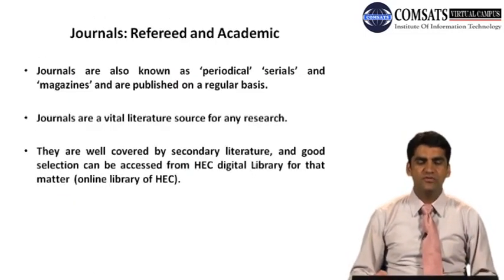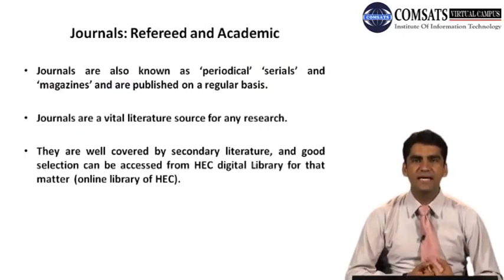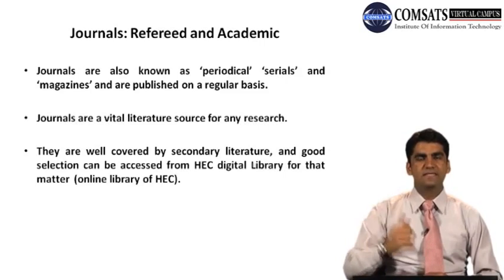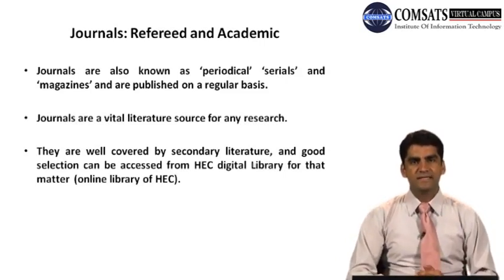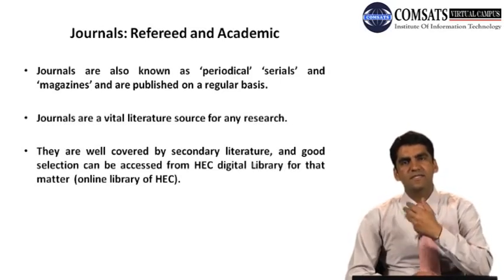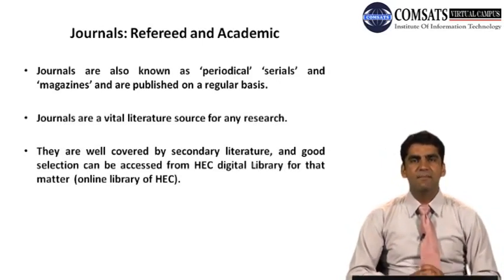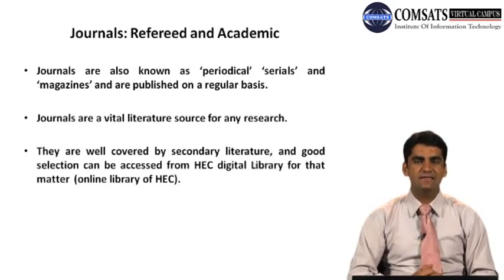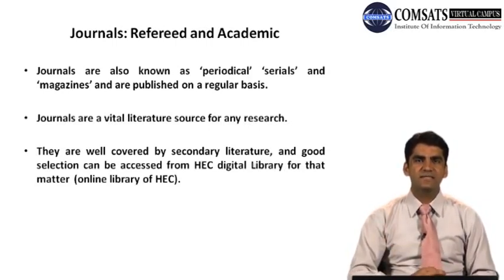Now we look at how various sources actually exist and how we can access them. First, we talk about refereed and academic journals — what they are, how they help us, and why they are important. Journals are also known as periodicals, serials, or magazines, and are published on a regular basis. This regular publication helps us understand how things are moving over time in the same line of inquiry. You can have access to an article published 10 years ago versus one published just 3-4 months ago. Journals are a vital literature source for any research.